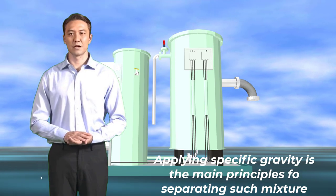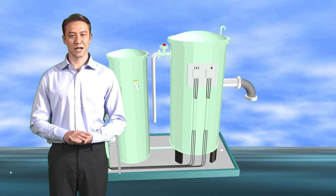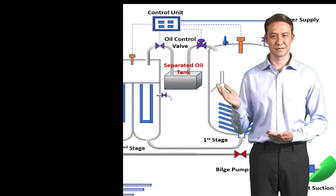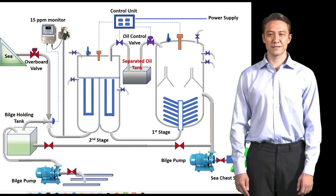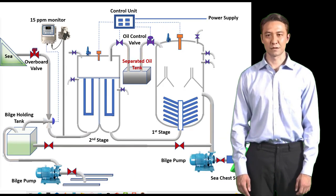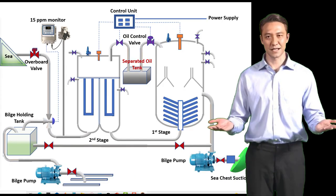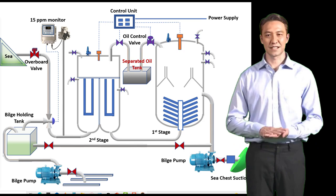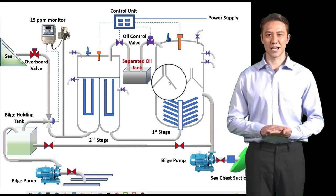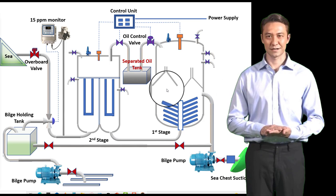Let me show you a plain schematic diagram to further understand how it works. The first stage works on the principle of separation by gravity. The second stage in this model works using a coalescing filter method. The process is procedural and sequential.